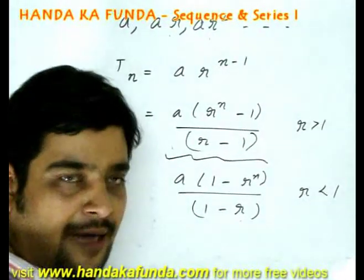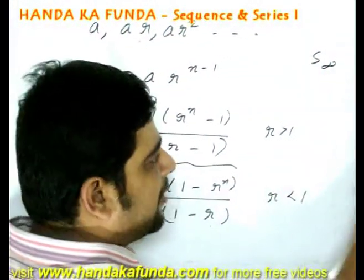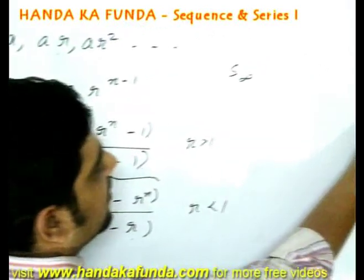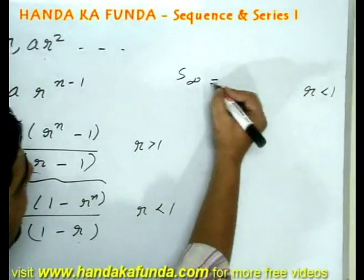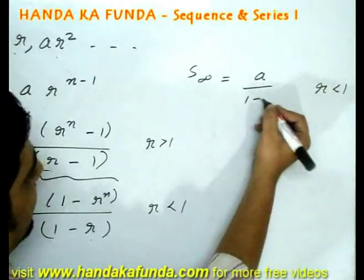Sometimes you are also asked for sum till infinite terms. That is possible if and only if the common ratio is less than 1 and it is given by a by 1 minus r.